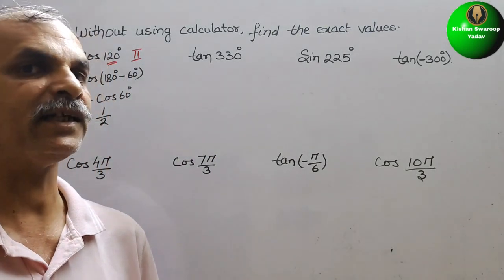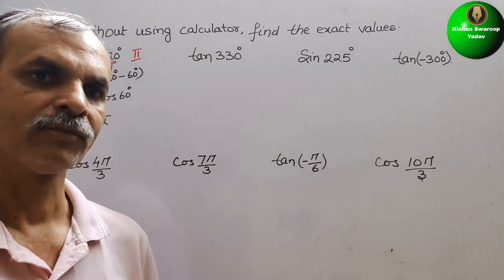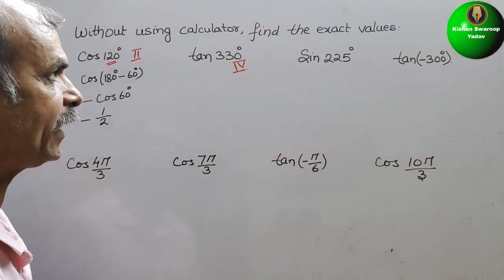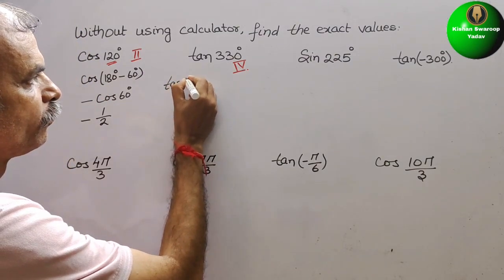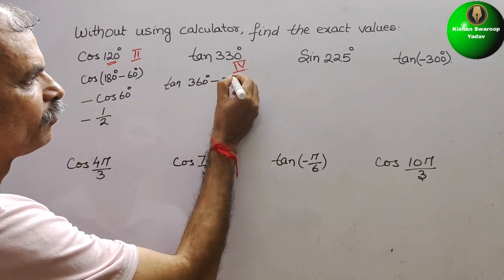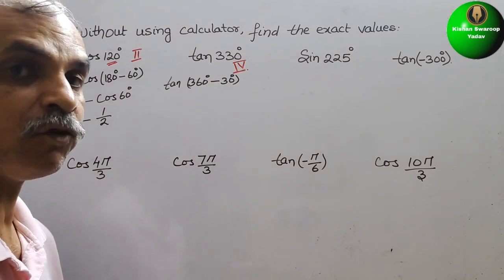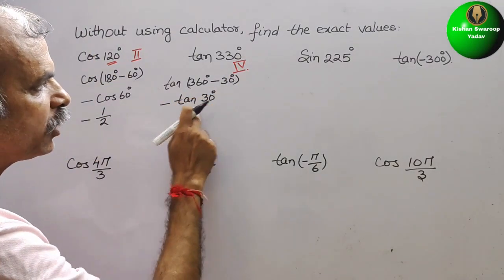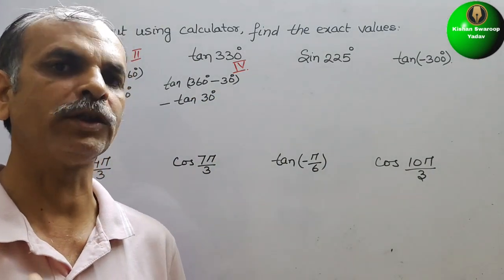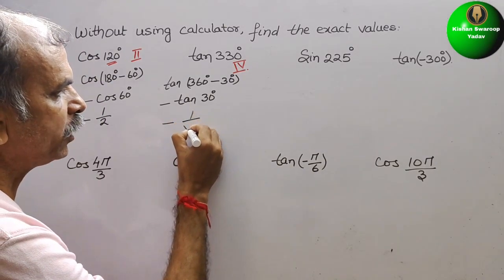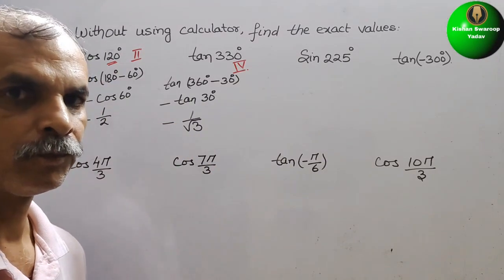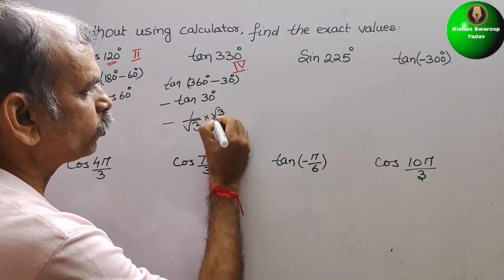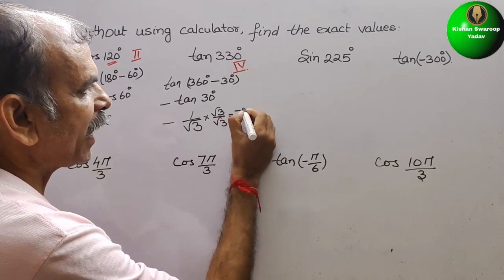Next: tan 330°. 330° lies in the fourth quadrant. We will rewrite it as tan(360° - 30°). We know the value of tan 30° is 1/√3. In the fourth quadrant, tan is negative, so now it will be minus 1/√3. If you rationalize by multiplying by √3/√3, you get minus √3/3.